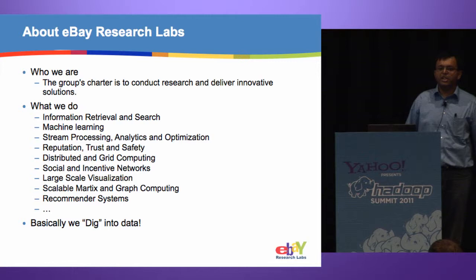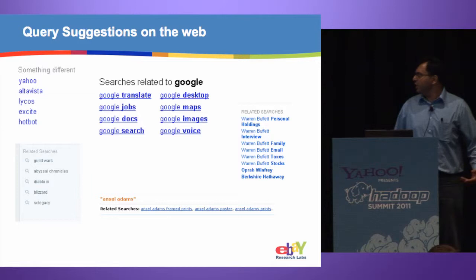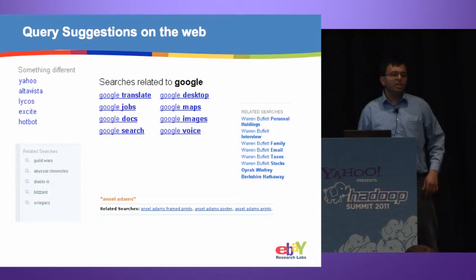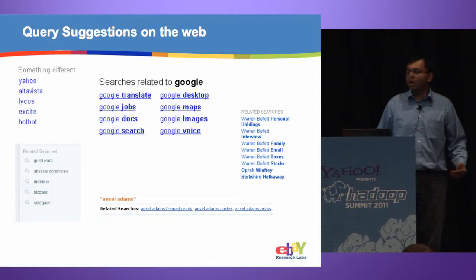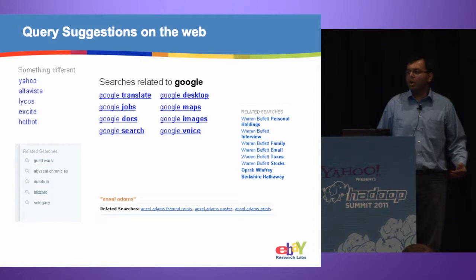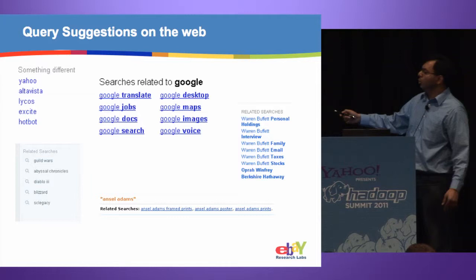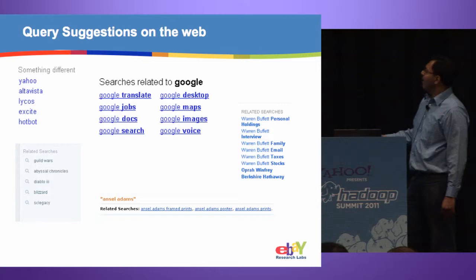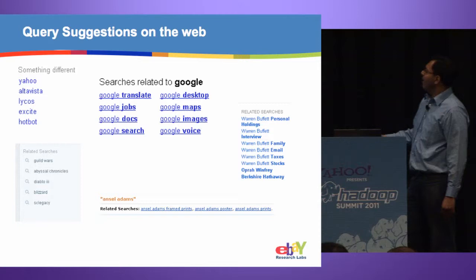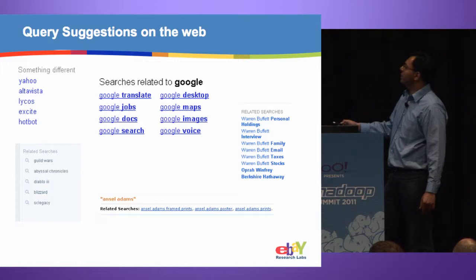Some of you might be wondering what these query suggestions are. Query suggestions are an integral part of most search engines. You might see them on different search engines on the right, left, top, or bottom. They might be called query suggestions or related searches, but they exist and many of you must have used them. For example, when you search for the term 'Google' on google.com, at the bottom of the page Google lets you narrow down your search, while on the left it shows alternatives like Yahoo, AltaVista, and Lycos.